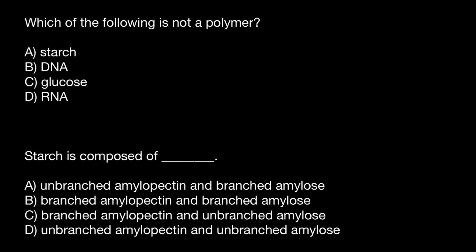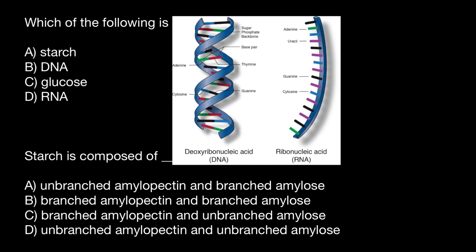You have to choose one of these answers. Take a look at this picture. We can see here DNA, double-stranded DNA, and single-stranded RNA. Both these molecules — variants B and D of the answers — are made of the repetitive units of the nucleotides. So this is an example of a polymer.